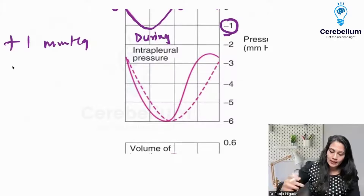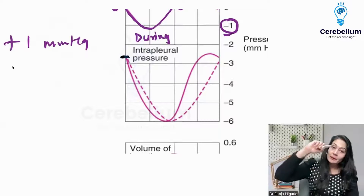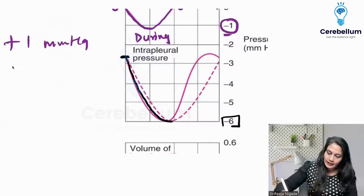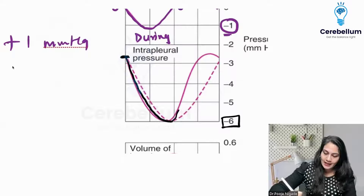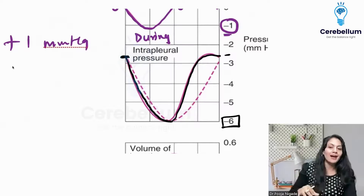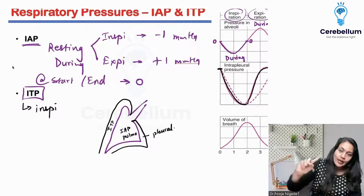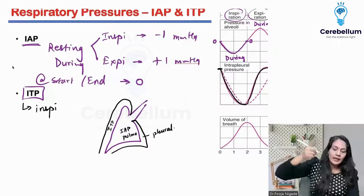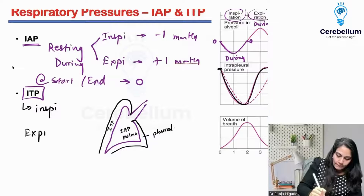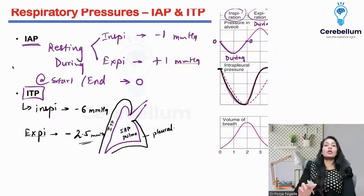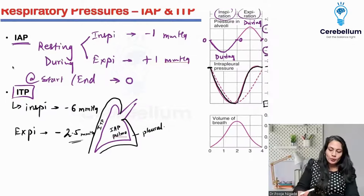The intrathoracic pressure is minus 2.5 mmHg at the beginning of inspiration. As you continue to inspire, it becomes more negative — minus 6 mmHg. As soon as expiration starts, it comes back to minus 2.5. Remember: during inspiration it is more negative, and during expiration it is minus 2.5 mmHg. Think of 'T for 2, 2' — minus 2.5 and minus 6.